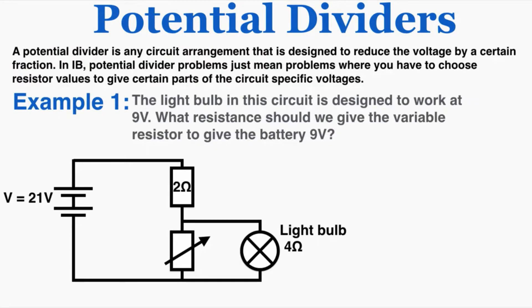Now we're ready to talk about potential dividers themselves. A potential divider is any circuit arrangement that is designed to reduce the voltage by a certain fraction. In IB physics, potential divider problems mean problems where you have to choose resistor values to give certain parts of the circuit specific voltages.